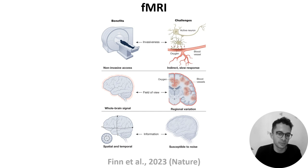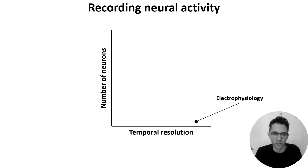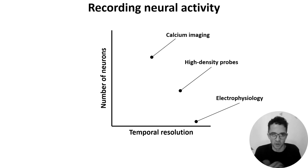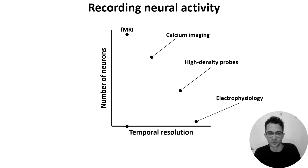Stepping back a bit, let's approximately map these techniques onto our axis. High-density probes, like Neuropixels, have high temporal resolution and can record from hundreds to thousands of neurons. Whole-brain calcium imaging has medium temporal resolution but can record from thousands to tens of thousands of neurons. fMRI has slow temporal resolution, though it's hard to place in terms of number of neurons, as it records a whole-brain signal but can't resolve individual neurons.